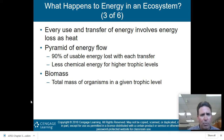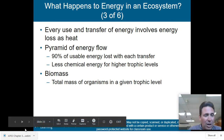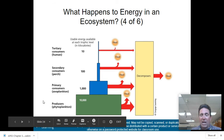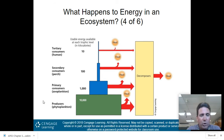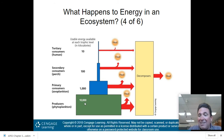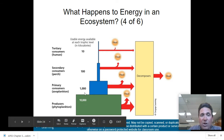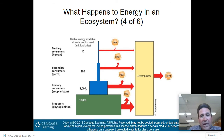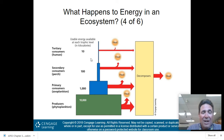Biomass is the total mass of organisms in a given trophic level. This chart explains it nicely. Producers like cytoplankton have about 10,000 kilocalories of usable energy. Moving to primary consumers, you only retain 10%, so it drops to 1,000 kilocalories. Secondary consumers get 100 kilocalories, and by the time you reach us — the tertiary consumers — usable energy has been reduced to only 10 kilocalories.